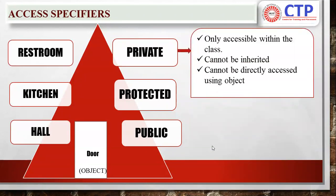Private — only accessible within a class, only you can access it, and it cannot be inherited. Which means even your daughters, sons, friends, or whoever it may be cannot access it — it's a private property. It cannot be directly accessed using objects. When you open a door, will you directly go to the restroom? No. If you want to enter, first you will enter the hall, and through that hall you will enter the restroom. Similarly, private property cannot be accessed directly using an object.